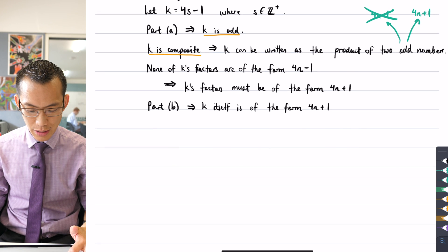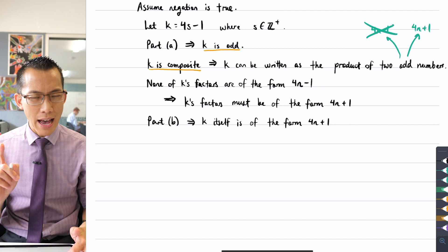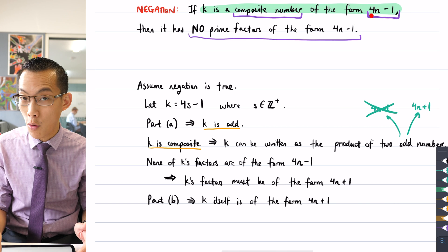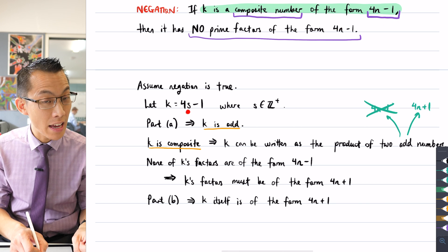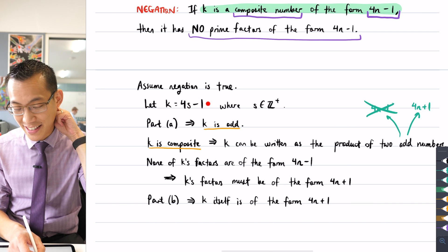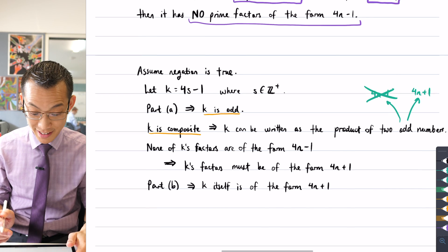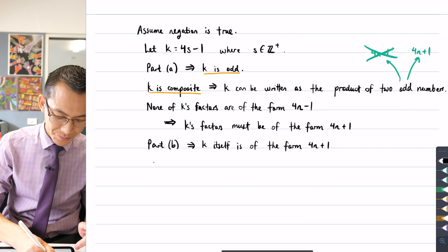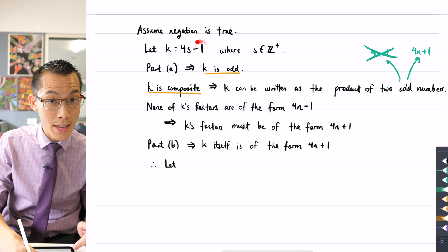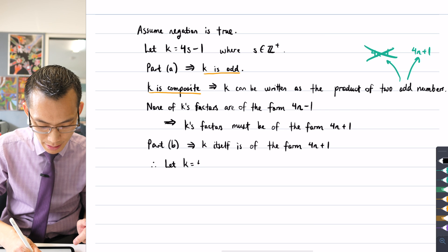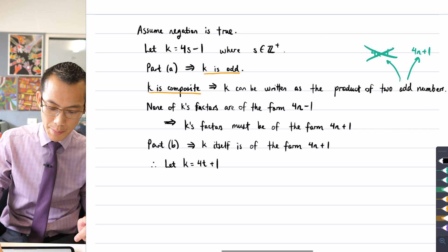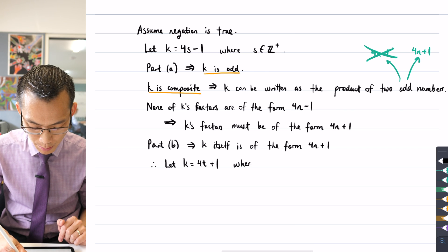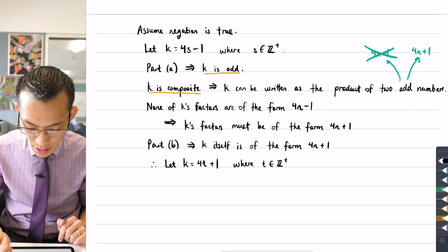So I can say, this is how I'm bringing all the pieces slowly together. If I'm saying that k is a composite number of this form 4n minus 1, I just have to pick a particular n like s. I can let k look like 4t plus 1 because I'm matching this form, and T is one of these positive integer things.